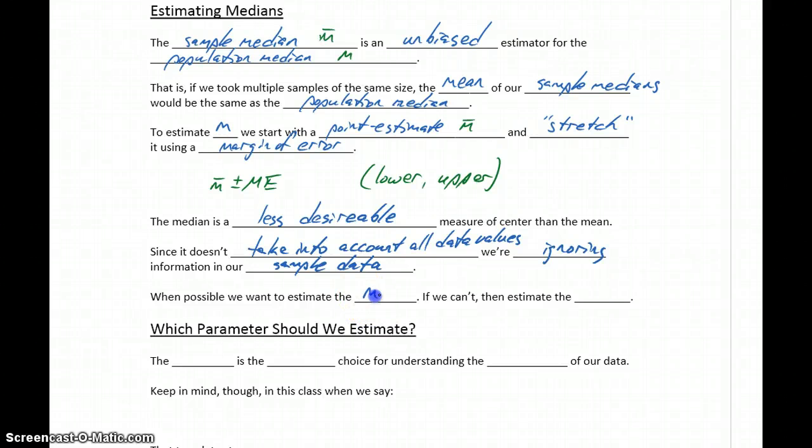So whenever possible, we want to estimate the mean. That's always going to be our first choice, but there are certain conditions that we have to meet in order to estimate the mean. So in cases where we can't, we'll turn to estimating the median as our backup.